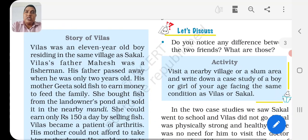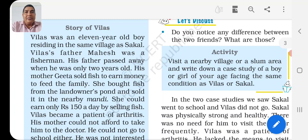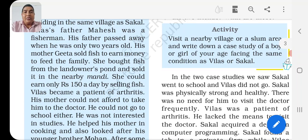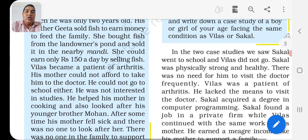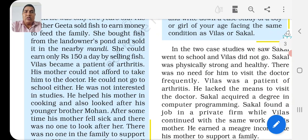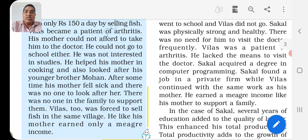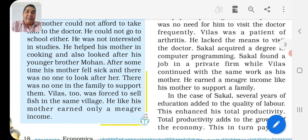The second story is of Vilas. Vilas was a 12-year-old boy living in the same village as Sakal. His father was a fisherman who passed away when Vilas was only 2 years old. His mother Gita sold fish and could earn only Rs. 150 per day. Vilas became a patient of orthopedic disease; his mother could not afford a doctor and he could not go to school either. He helped his mother in cooking and looked after his younger brother Mahon. After some time his mother fell sick and there was no one to support the family, forcing Vilas to sell fish in the same village to manage income.